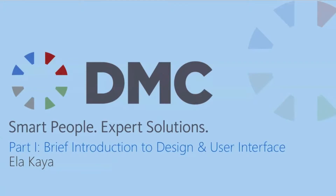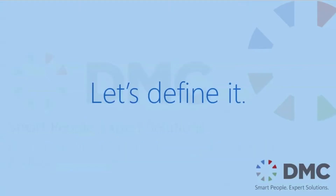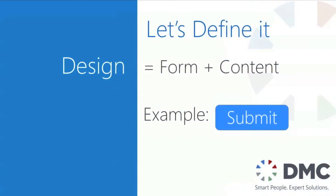Before I jump into the rules of design and user interface, I'd like to start off by defining and introducing these terms. Design equals form plus content. The example I have here is a submit button. In this example, the blue rounded rectangle is the form and the submit text is the content. The form is telling me the parameters of where I can click, and the content is telling me what will happen when I click.